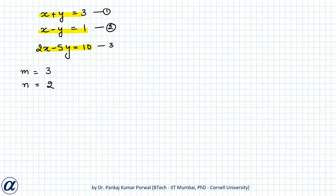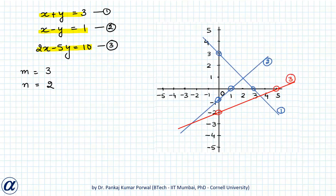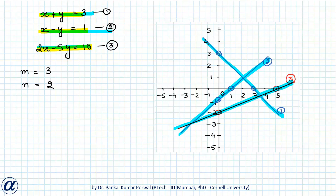Calling these equations 1, 2, and 3 and plotting them on a 2D plane, line 1 represents equation 1, line 2 represents equation 2, and line 3 represents equation 3. There is no common point shared by all three lines, meaning no pair (x, y) satisfies all three equations simultaneously. Hence the system has no solution and is inconsistent.